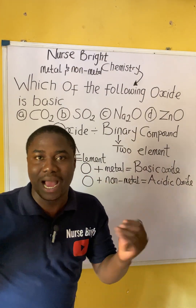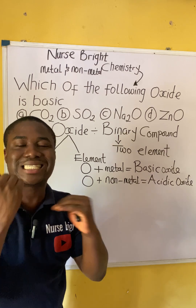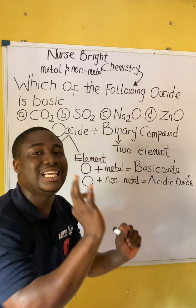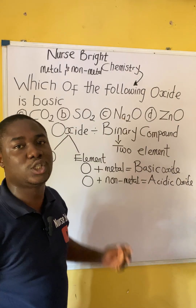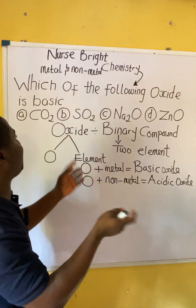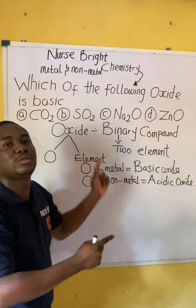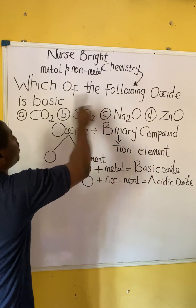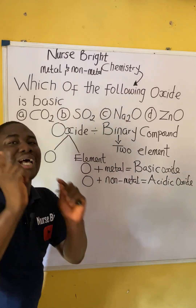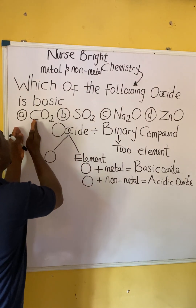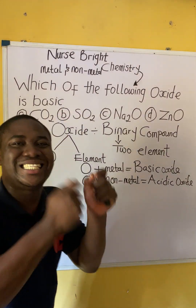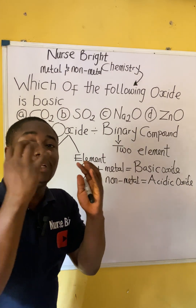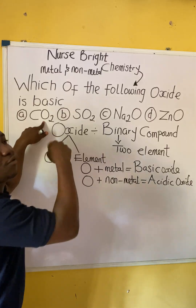Though we have other types of oxides — like neutral oxides, like amphoteric oxides — the key things to note are: when oxygen combines with a metal the oxide is basic, and the question is asking us which of the following oxides is basic. So you have to look at the elements attached to oxygen in each option. You can see option A — carbon is attached to oxygen.